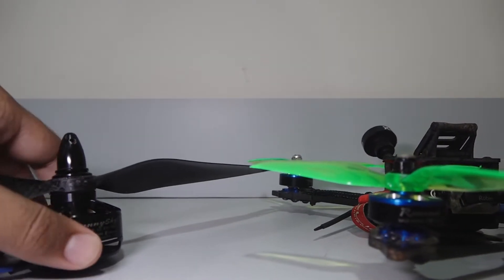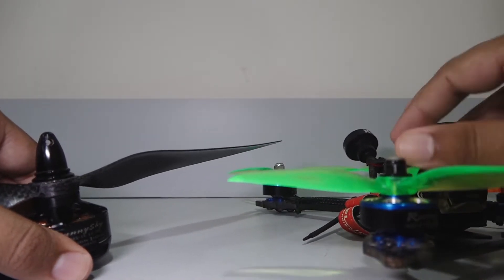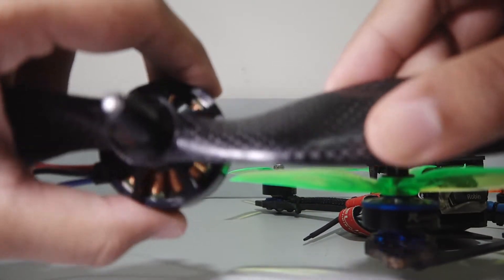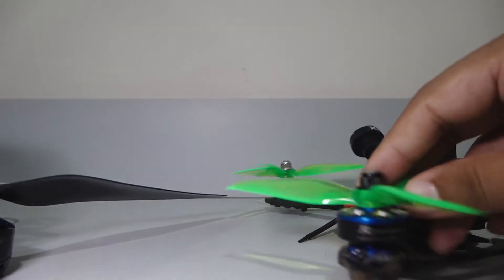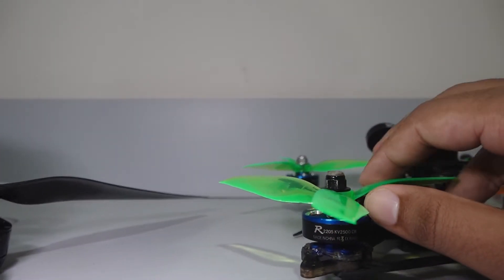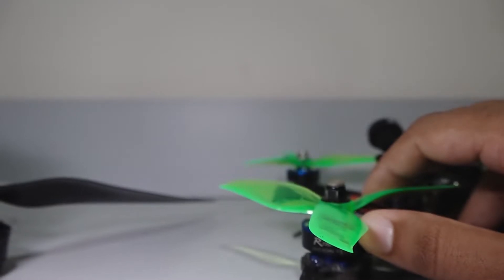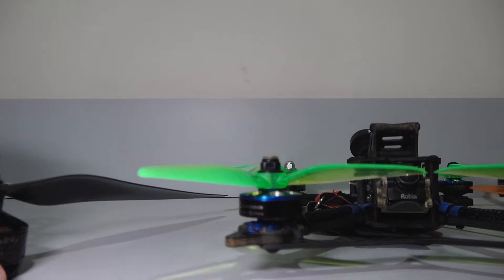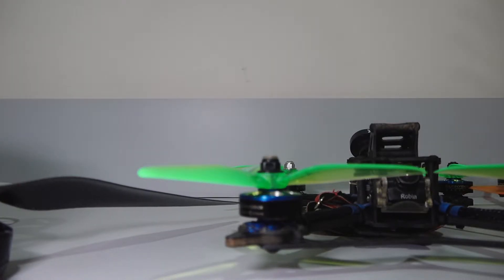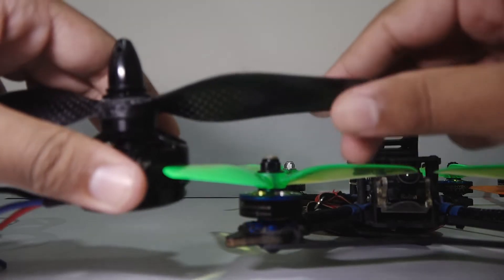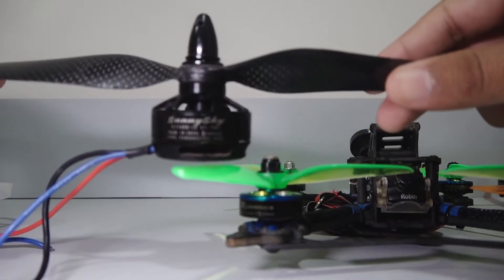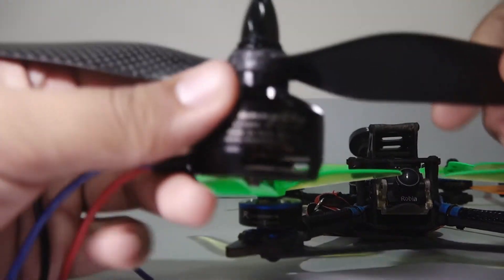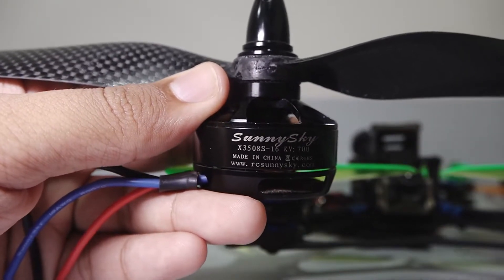This motor is big, and to complete a single revolution it will take much longer than a smaller motor. This is like the wheels of a car and a truck. Car wheels are smaller and the car moves faster, but a truck, even though slower, can lift bigger things. Since this one is bigger, it will be used in a drone for carrying heavy loads, maybe a spraying drone or a cinema drone.